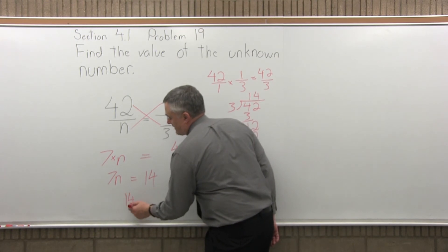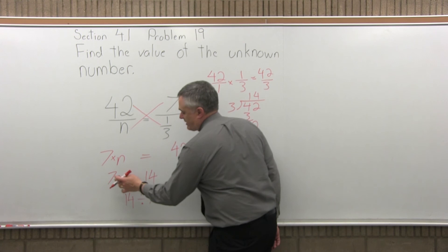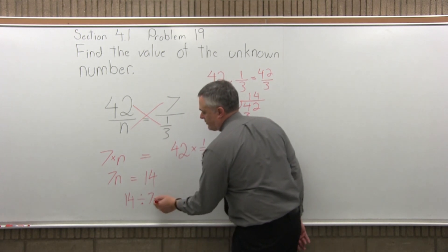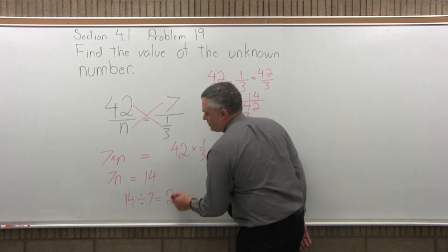The way I do that is divide 14 by the number in front of the n, which is 7. 14 divided by 7 is 2.